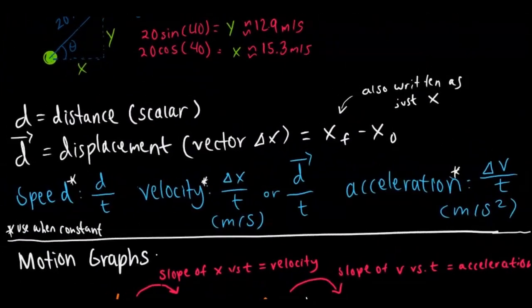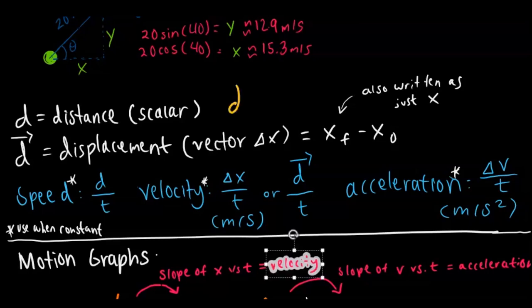Now let's get into some of the actual motion stuff for kinematics. Distance is represented by d, but sometimes it can be written as d for displacement. The more traditional way to represent displacement is d with an arrow over it to show direction. Distance is scalar while displacement is a vector, and that represents change in position.